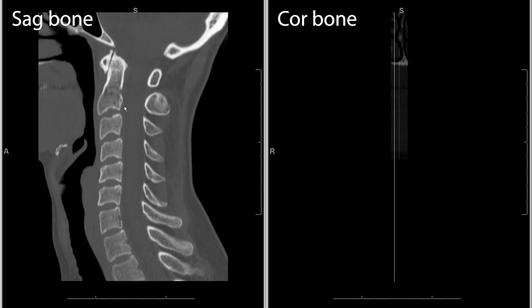Back in the old days we used to say that if there was a reversal of lordosis — a cervical spine usually has a curvature like a reverse C — if it was straight or reversed you might think about ligamentous injury. Now the most common reason for that is just the positioning of the patient with the scanner, because many times they're going to be in a cervical collar. Here you see that the ligamentum flavum is lined up normally and the space between the posterior elements is normal.